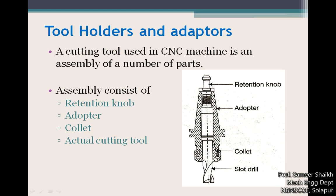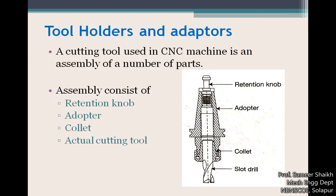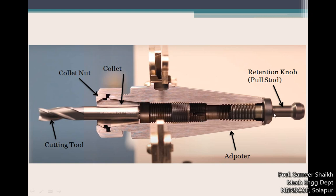Here we have the collet, which is a small part, and the actual cutting tool. A cross-section has been taken to highlight various sections of the assembly. The next figure shows an actual cut section of what a cutting tool assembly might consist of. This is the retention knob, held inside the adapter by a threading arrangement. This is the adapter with its tapered section, then the collet, the collet nut, and the cutting tool.